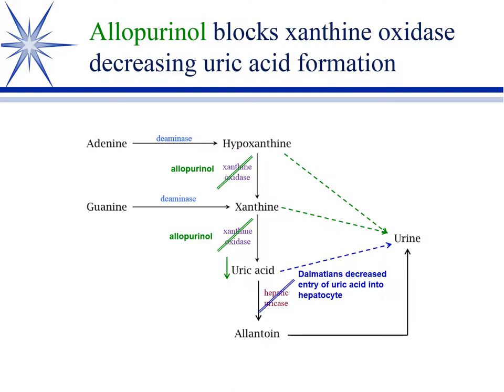We treat that pharmacologically with allopurinol. Allopurinol is a xanthine oxidase inhibitor, so you decrease the amount of uric acid. When we do that, the xanthine and hypoxanthine go directly into the urine, and less uric acid goes into the urine. So you decrease the amount of uric acid in the urine and hopefully decrease the amount of urate stones.